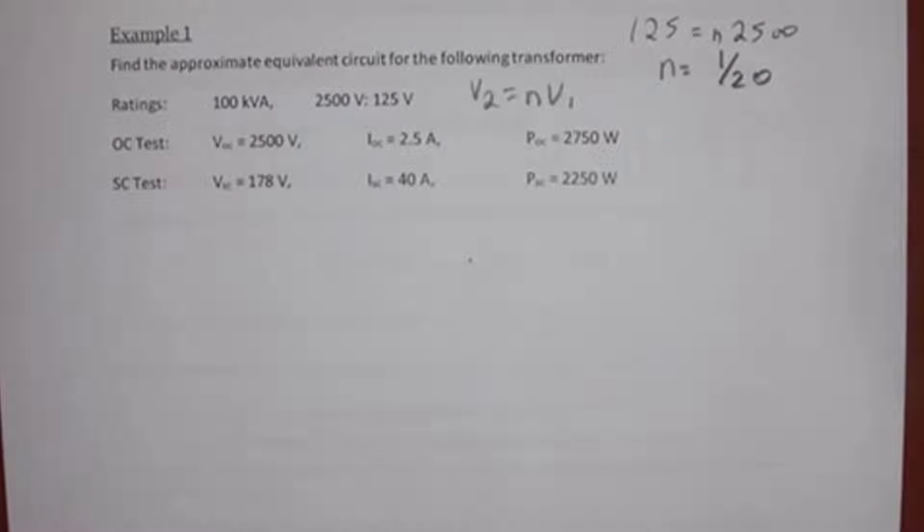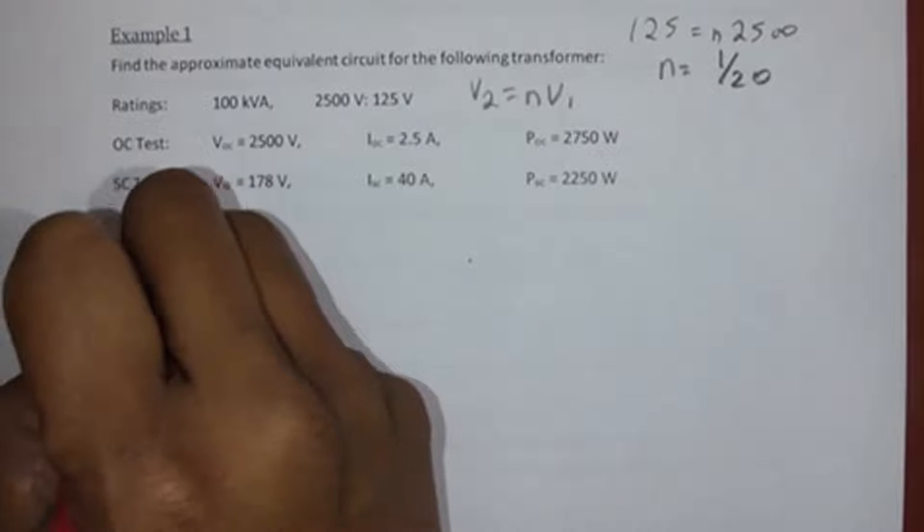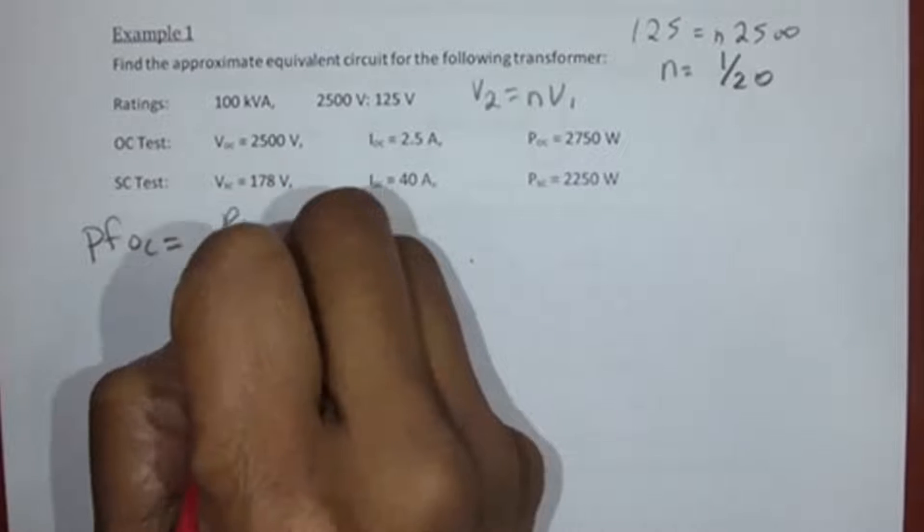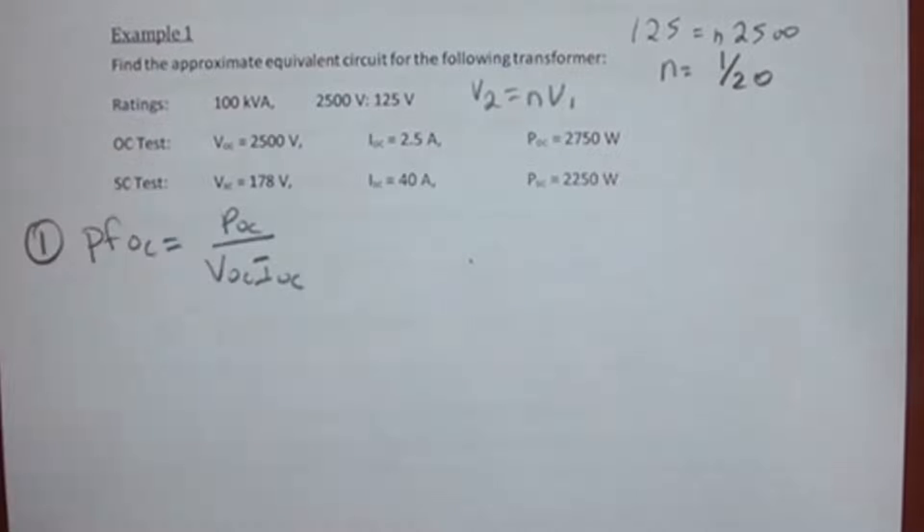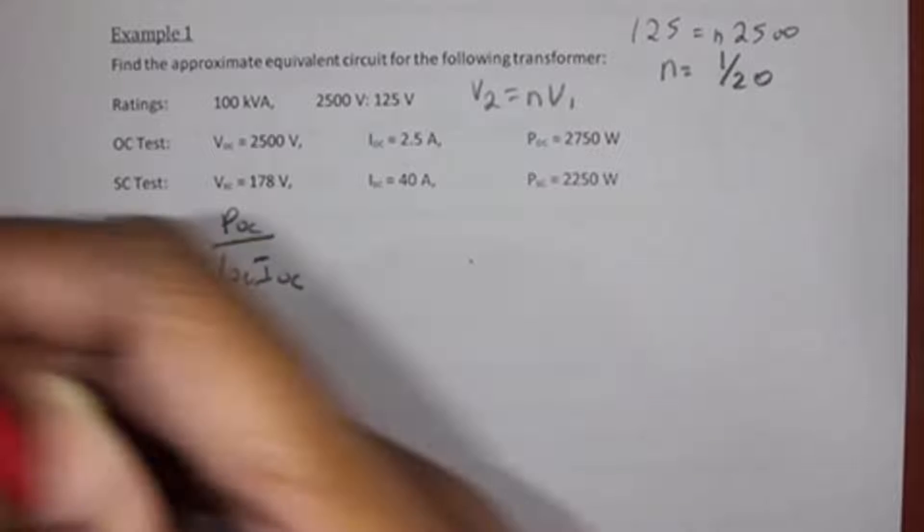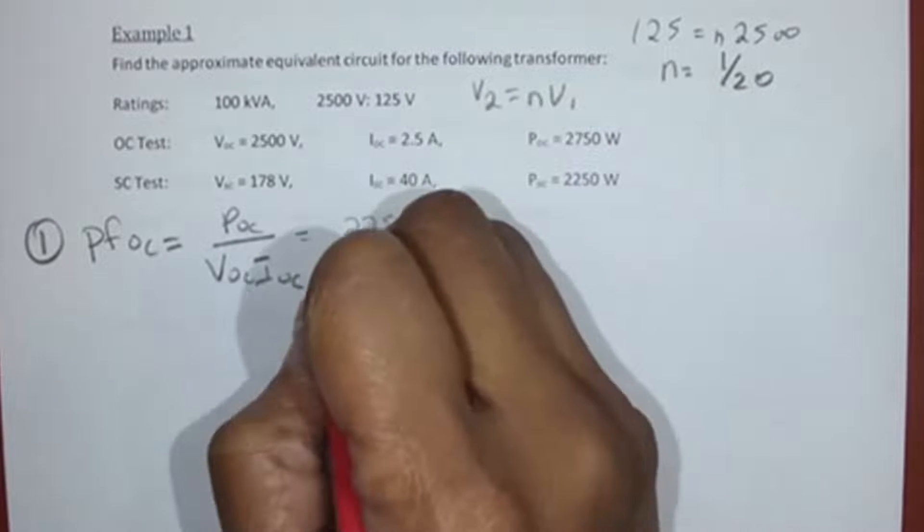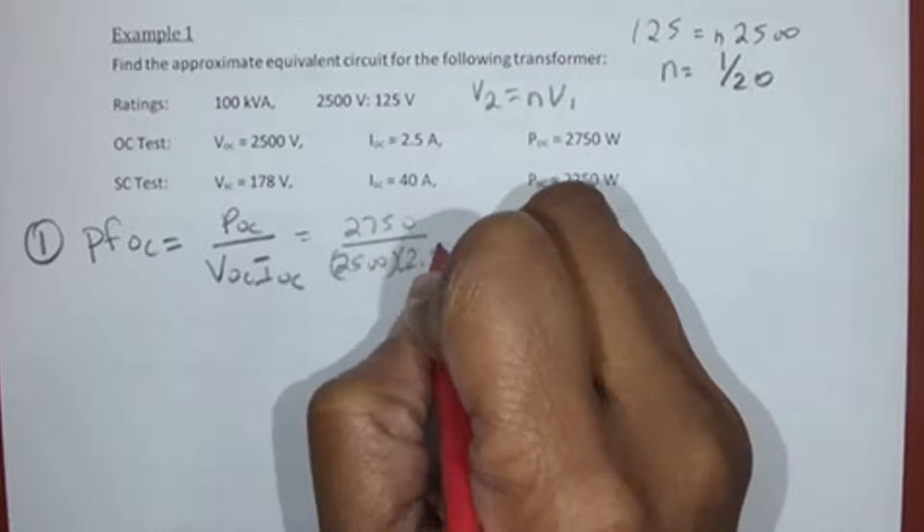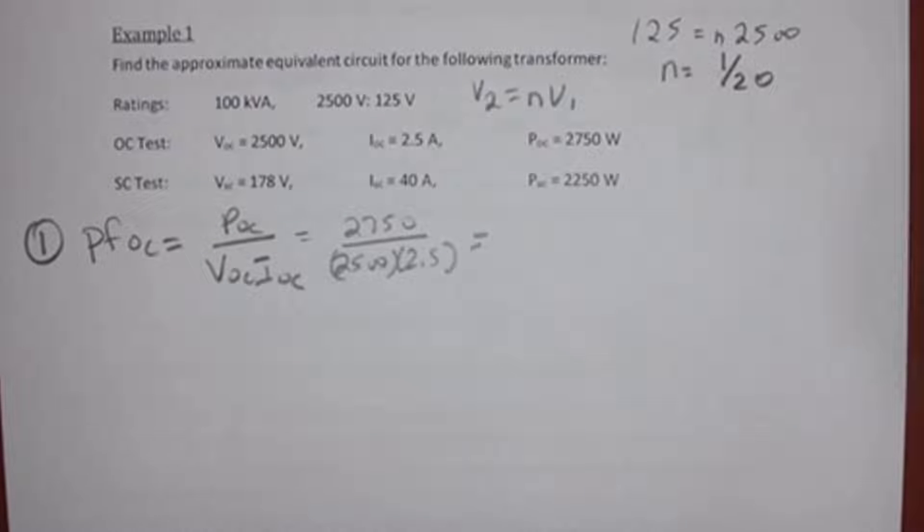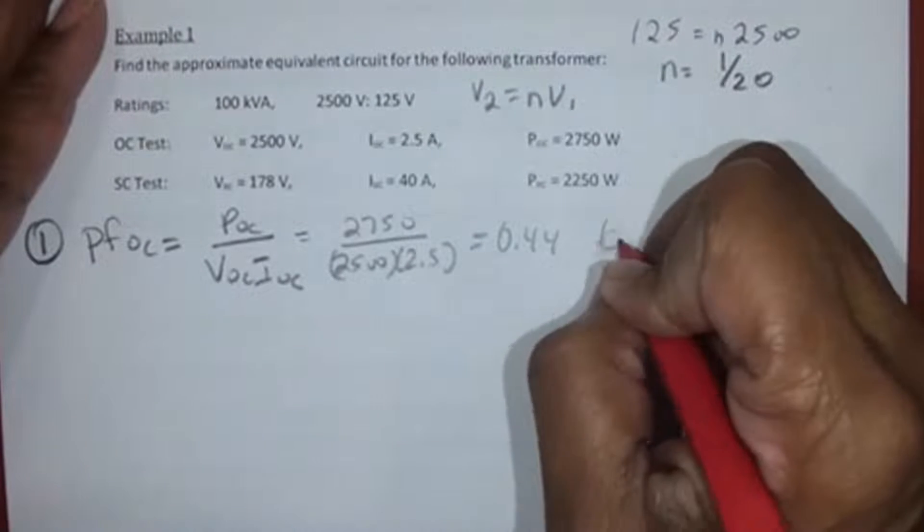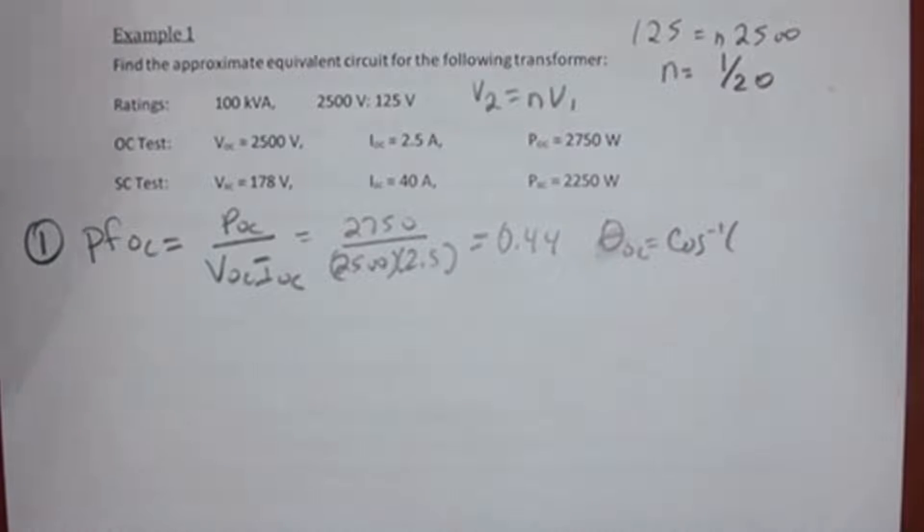So if we're going to do the open circuit method, the first thing we need to do is PFOC equals POC over VOC times IOC. That's step one. So this is going to be 2750 over 2500 times 2.5. What is PFOC? 0.44.